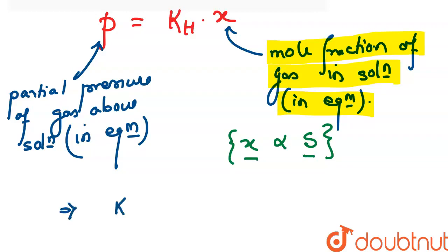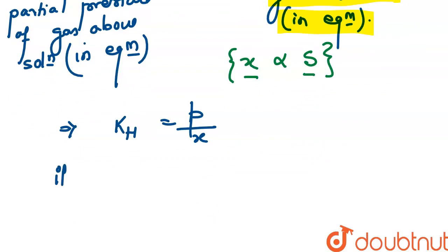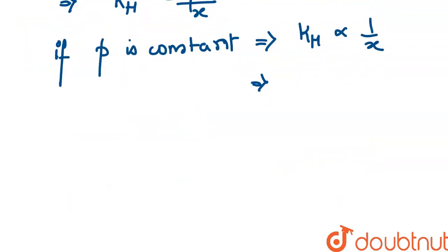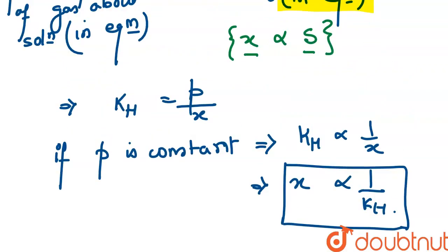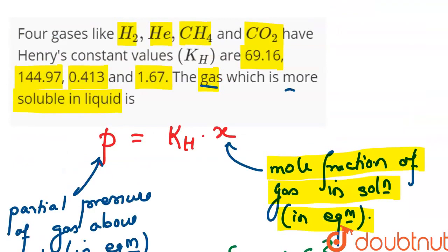We can say KH is P by X. That means if P is constant, then we can say that KH is inversely proportional to X, or X is inversely proportional to KH. First of all, if we look at the question, we have asked which gas has more solubility in liquid. That means we have to tell for which gas is the value of X maximum.